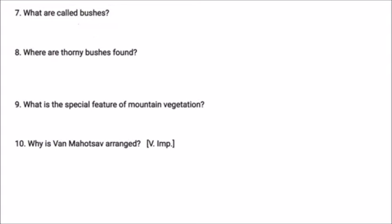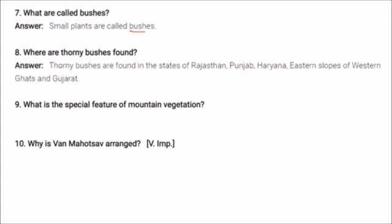Small plants with thorns are called bushes. Thorny bushes are found where the climate is dry — in the states of Rajasthan, Punjab, Haryana, eastern slopes of the Western Ghats, and Gujarat.